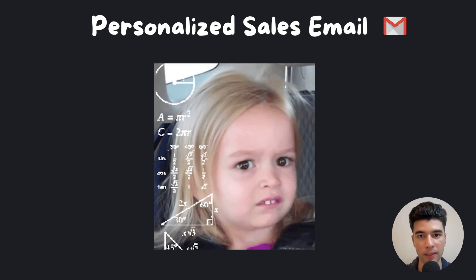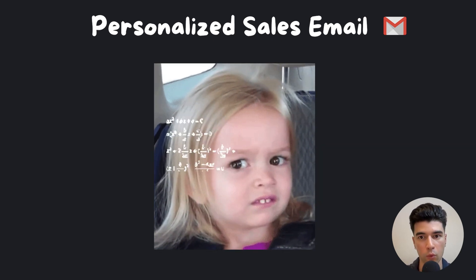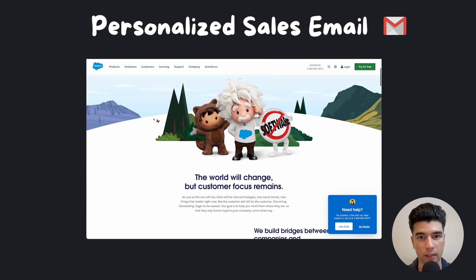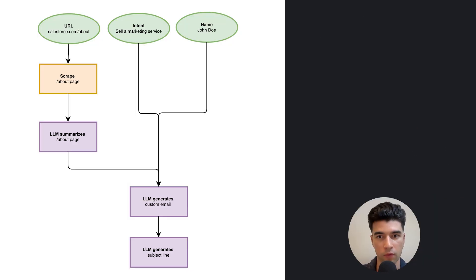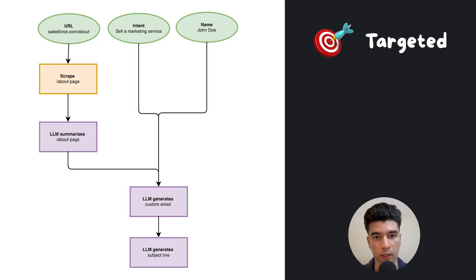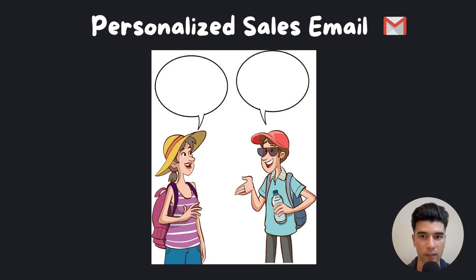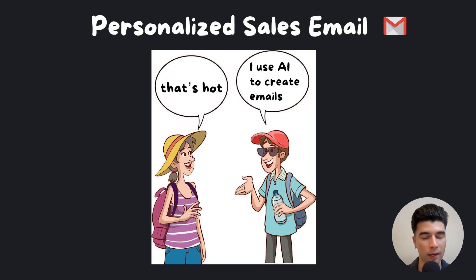You don't need to be technical to understand this workflow. We'll be making custom sales emails based on a company's about page. This workflow automation makes it possible to generate targeted emails at scale — we're talking thousands of custom emails created in minutes. I'll show you how to think through the sequence and what really happens behind the scenes when someone says they're using AI to generate emails.